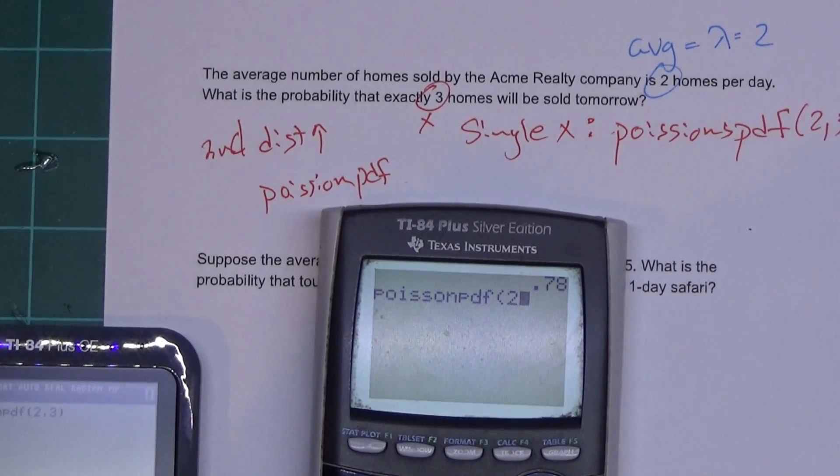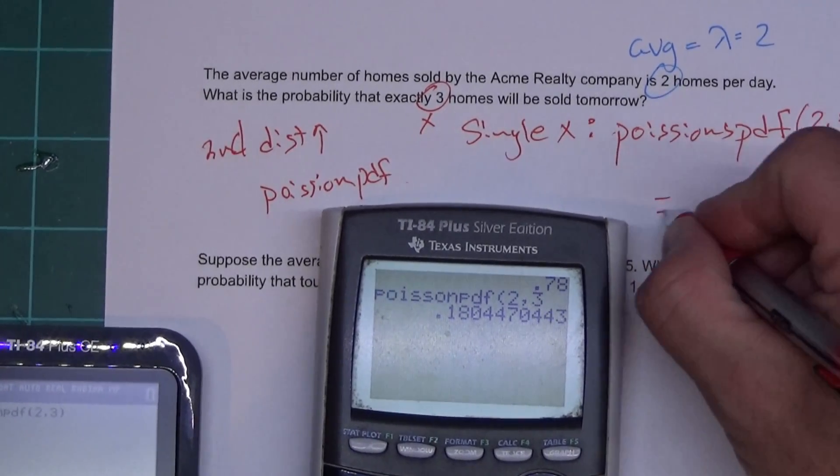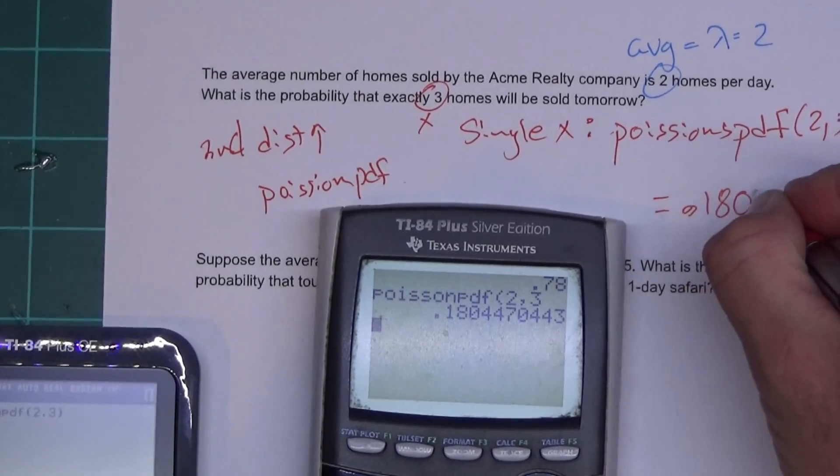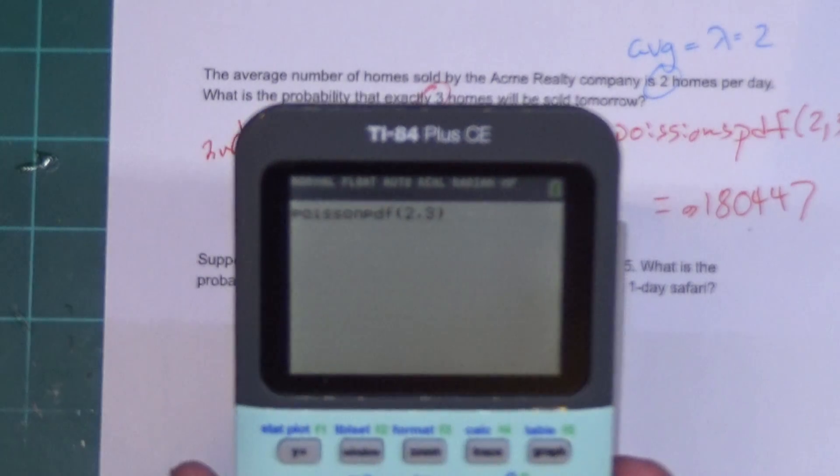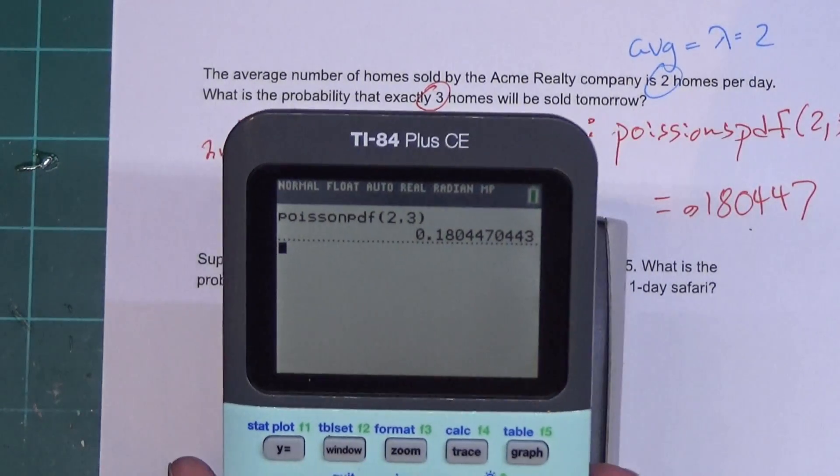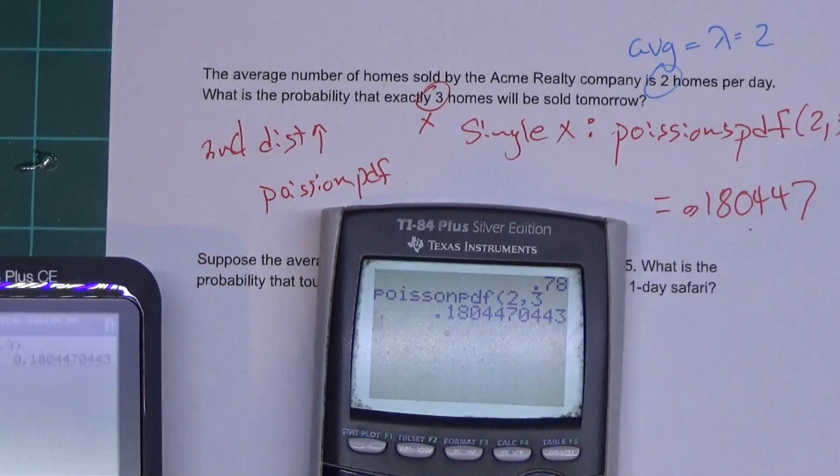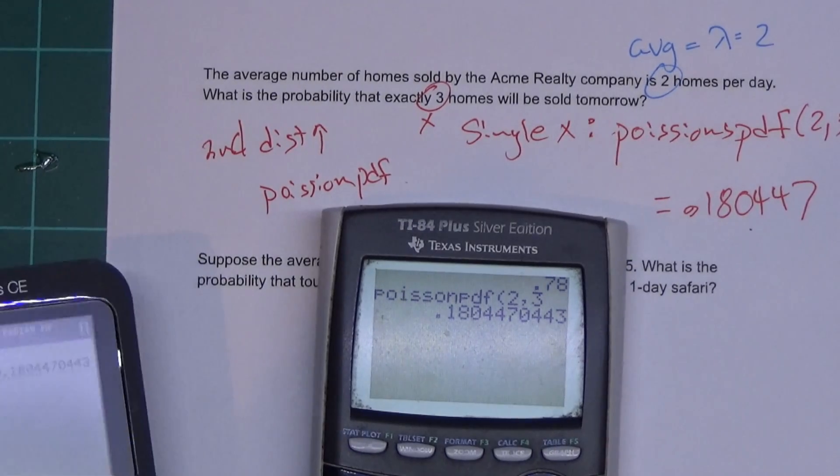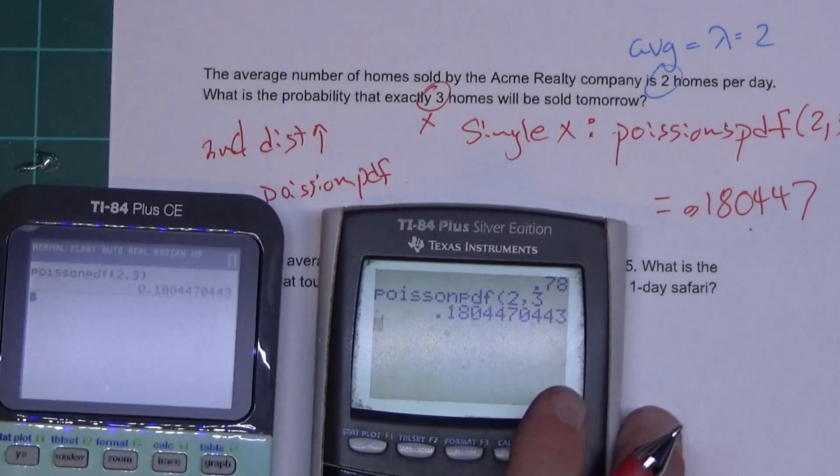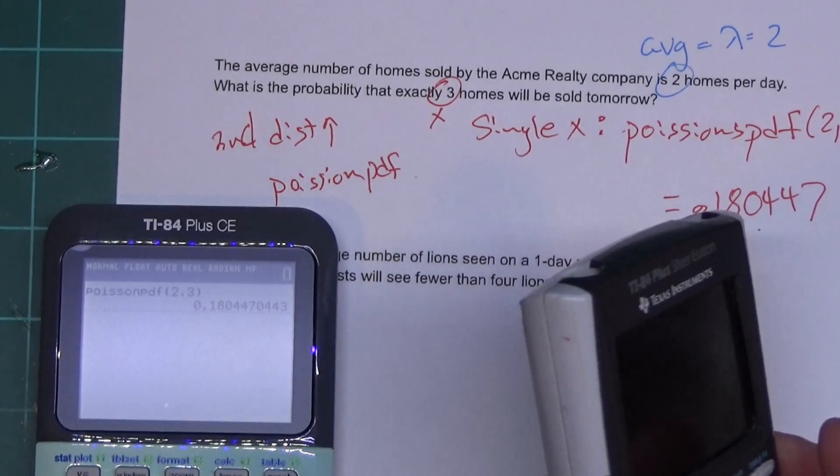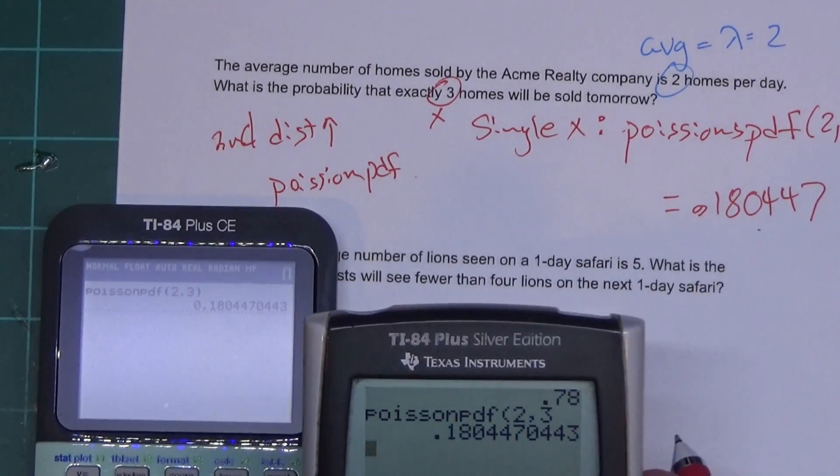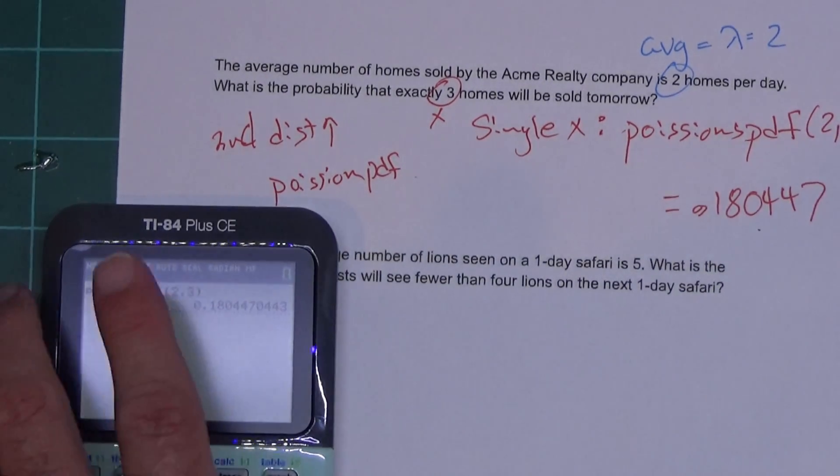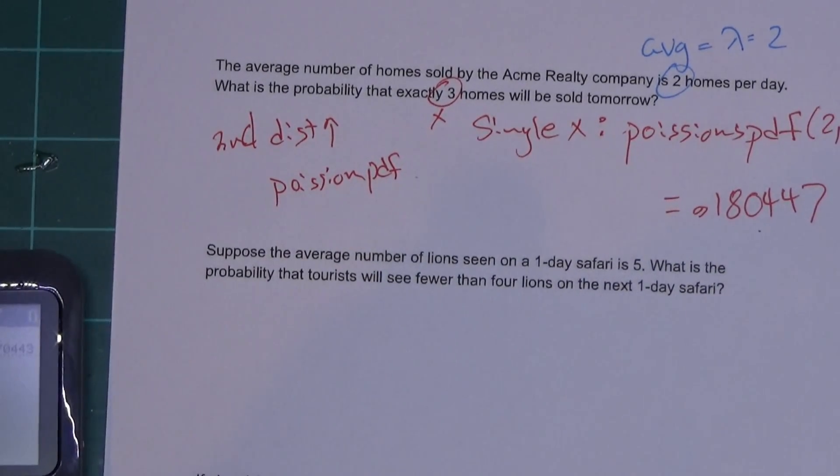So I hit 2, the comma sign, and 3 and press enter, and it tells me the probability of this is 0.180447. And if I press enter on this one I'm gonna get the same answer. While they are looking different, they are still basically the same calculator. This one's just got a prettier screen - it's smaller, it's rechargeable. This one's not. I prefer the bigger screen because I'm blind, man. Whatever, moving on.